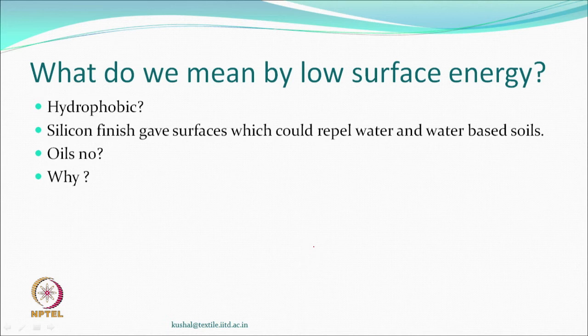Let us understand again what we mean by low surface energy. Treating a fabric with silicones creates a hydrophobic surface, repelling water and water-based soils. But why can no oil be repelled? The surface energy referred to is gamma SV — the interface between solid surface and vapor, i.e., air. Why and how does this interface energy go down? That depends on whether the vapor phase dislikes or likes the solid surface.